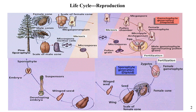In the male cones, meiosis produces the male gametophytes into the pollen. Pollen grains carrying sperm are dispersed by the wind and land on the scales of the female cone — that cone is called the ovuliferous cone. The pollen then grows a pollen tube that penetrates the female gametophyte and conducts the sperm to the egg.